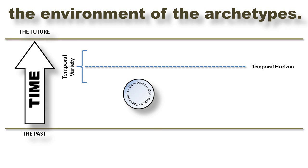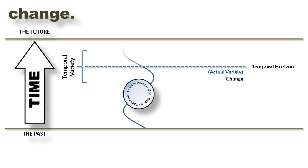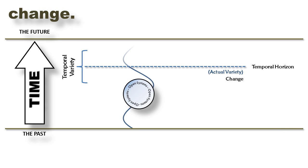Actual variety, which is characterized by change and emergence, represents the things that actually happen. Potential variety — uncertain but foreseeable events in the future — represents the variety that hasn't happened yet, but could. Change is characterized by a regular, steady pattern of variety that is expected, even counted on. Seasonal changes, tides, day and night are all prime examples of change. As this figure shows, we can perceive change long before it happens, and it generally follows a regular pattern with little variation.